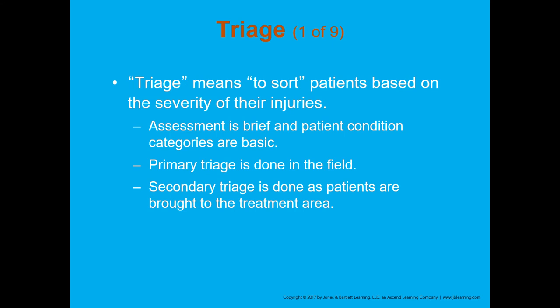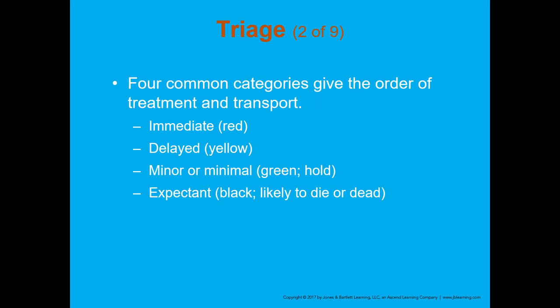Triage — let's talk about what it means. Triage means to sort patients based on the severity of their injuries. The assessment is brief and the patient condition categories are basic. We're looking at ABCs when it comes to triage — we're not doing a SAMPLE history, OPQRST, or a full head-to-toe assessment. We're looking at them very quickly to determine if their ABCs are intact and if there's any major bleeding. Primary triage is done in the field; secondary triage is done as patients are brought to the treatment area.